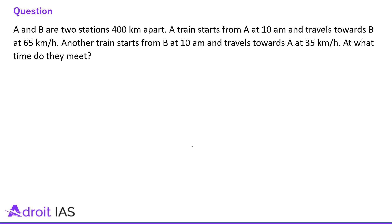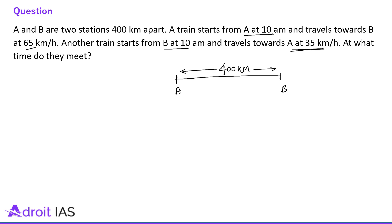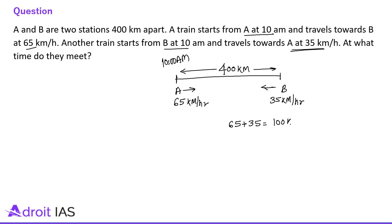Question 2: A and B are two stations 400 km apart. A train starts from A at 10 AM, travels towards B at 65 km per hour. Another train starts from B at 10 AM and travels towards A at 35 km per hour. Both trains are starting at 10 AM, and they are approaching each other at 65 plus 35 = 100 km per hour.